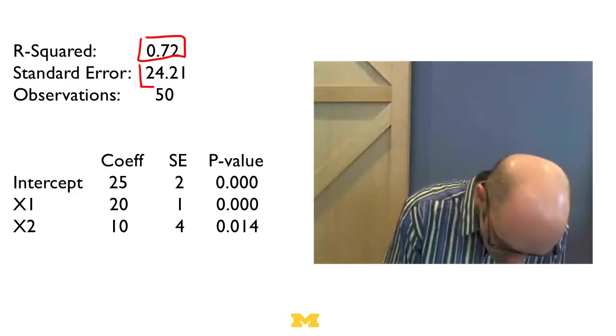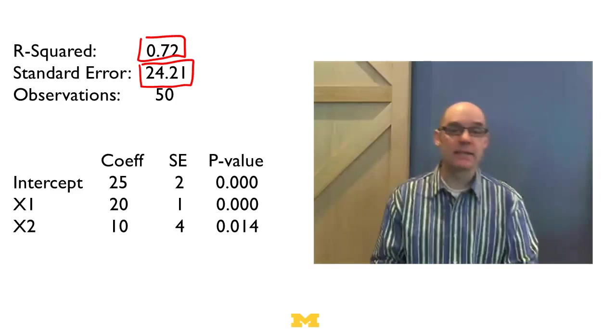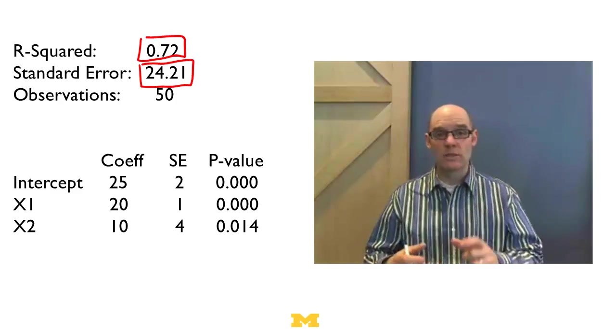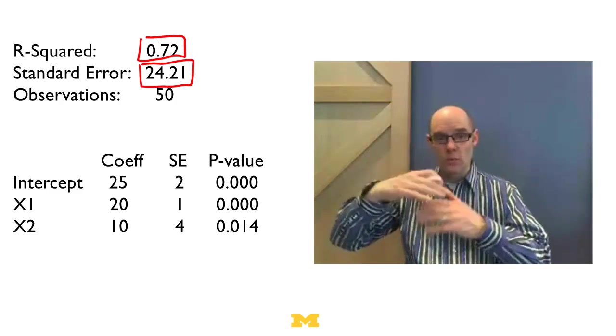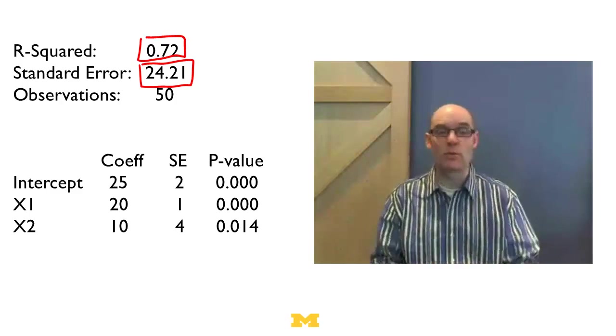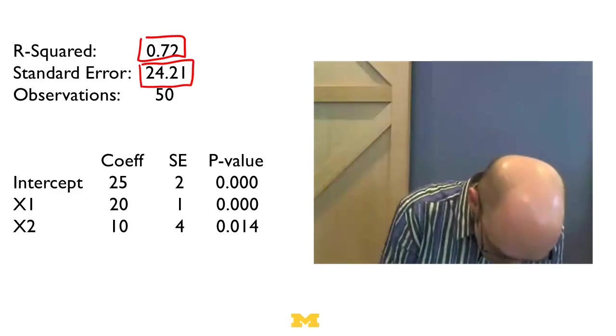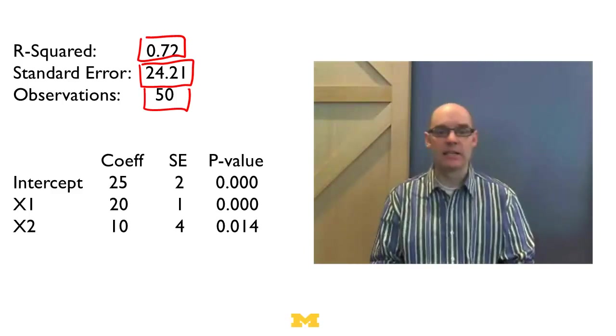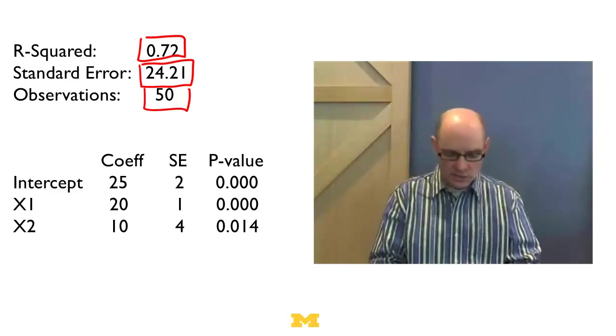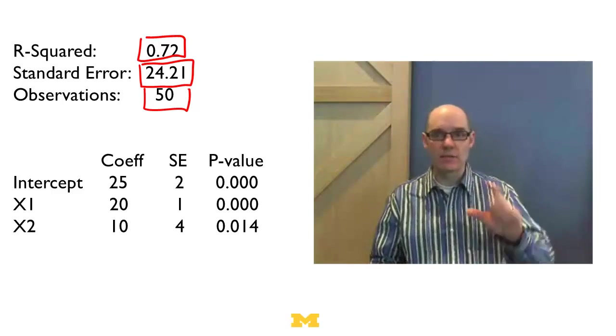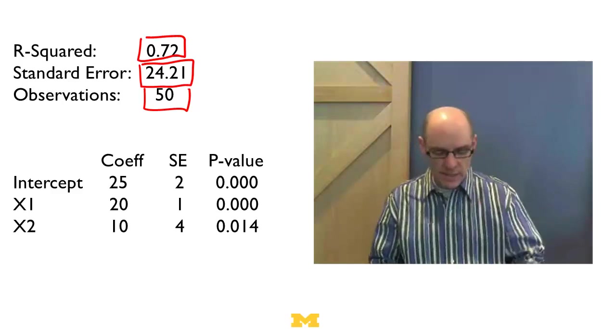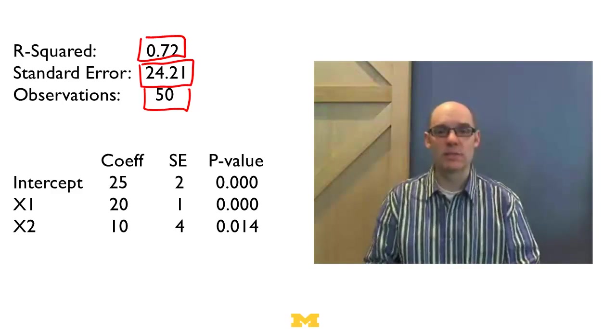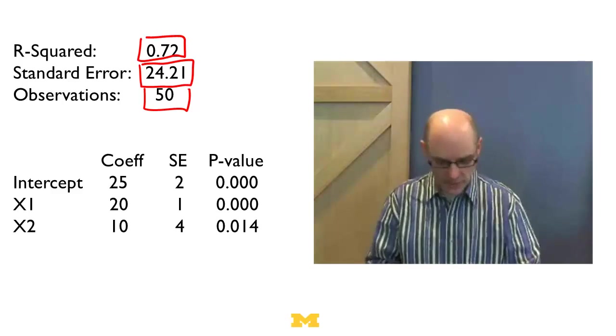Standard error, 24.21, is telling us, on average, what was the standard deviation in the model. So how far from the mean were things? And this is telling us, on average, about 24. And then this observation thing, this 50, is just saying we have 50 data points. So, we have 50 data points, on average it was 24 away from the mean, and we could explain 72% of that variation. So, you know, not a bad model.